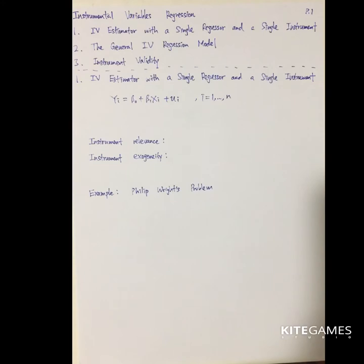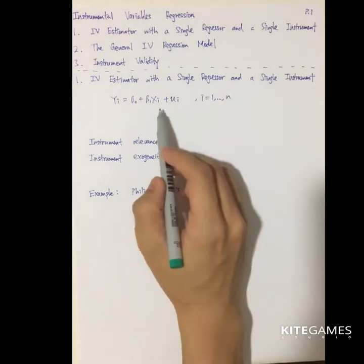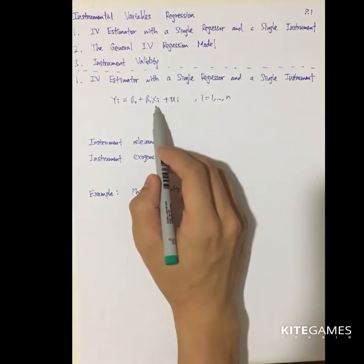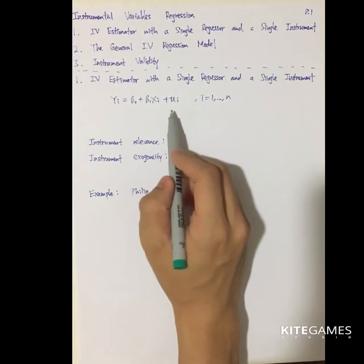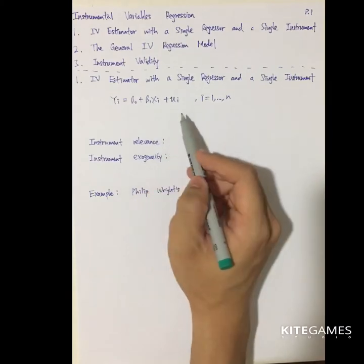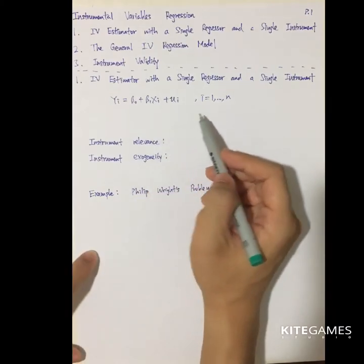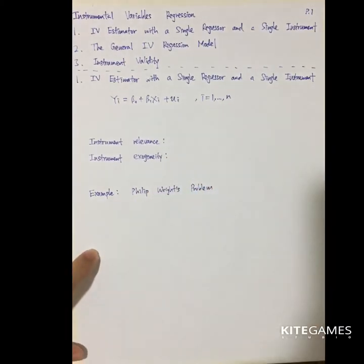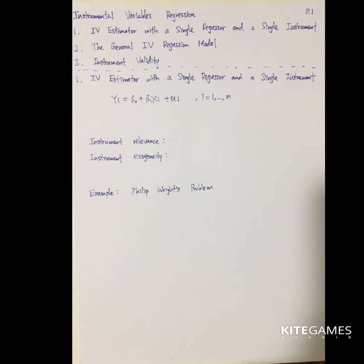You may suffer from omitted variable bias. This omitted variable bias means the covariance between X and u_i is not equal to zero, such that the expected value of u given X is not zero. This violates the OLS assumptions. Therefore, IV is a method to solve this problem.